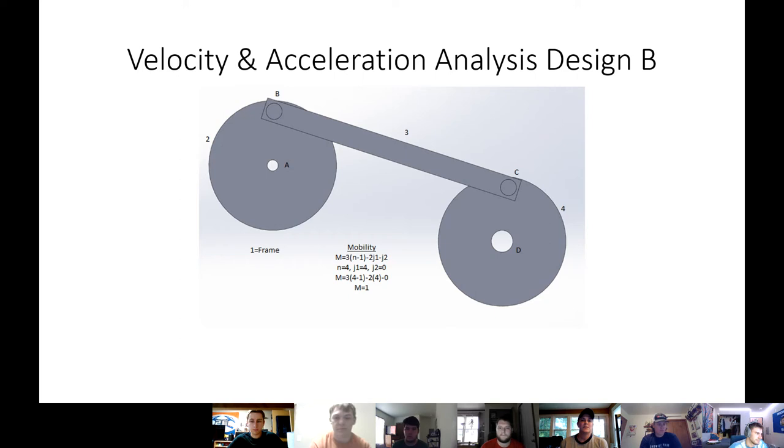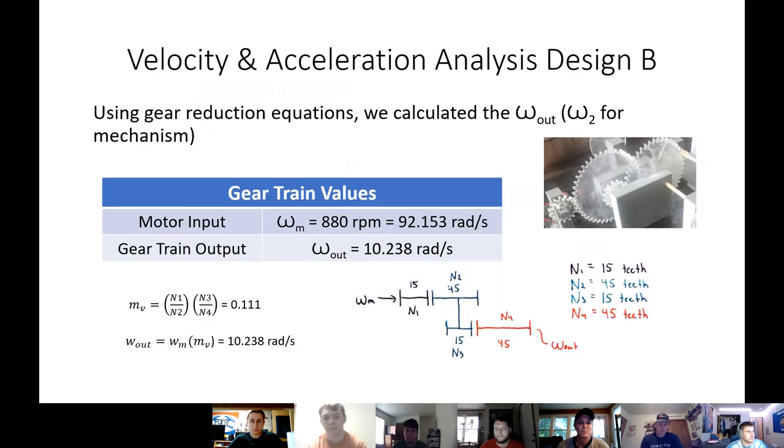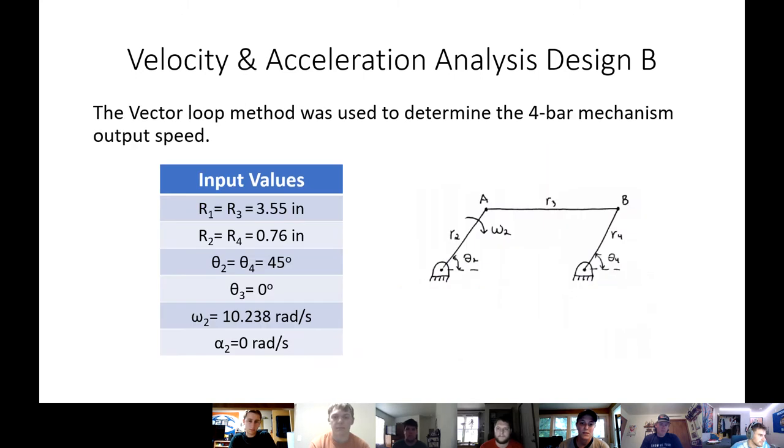Let's see Design B's velocity and acceleration analysis. Here is the analysis we used to obtain the gear train output. So the motor input specification we got was 880 RPM. That converts down to or up to 92 radians per second. And then when you insert that into the gear reduction equations, that total gear train output for our design was around 10 radians per second.